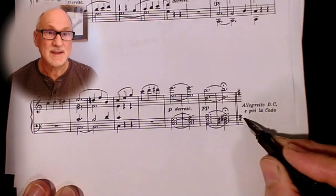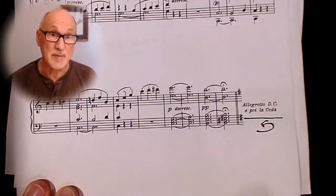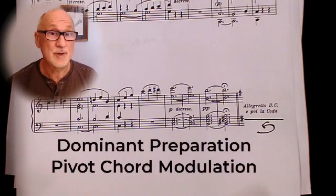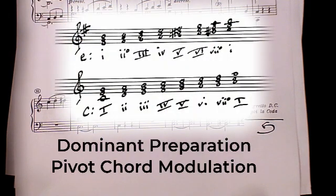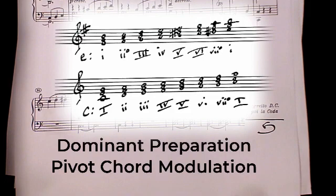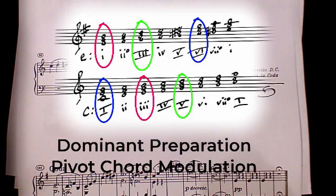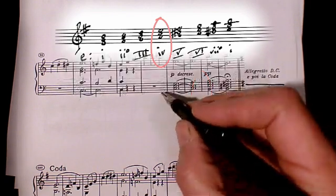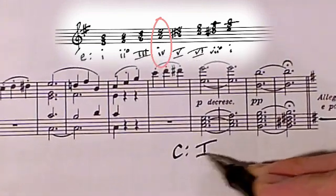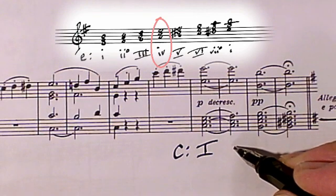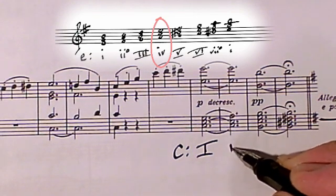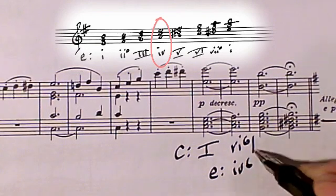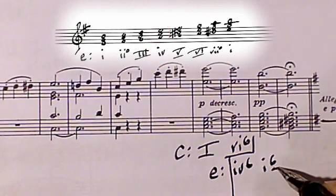At measure 100, he marks Allegretto DC e poi la coda, telling the pianist to go back and play from the beginning. Of course, this necessitates a modulation back to E minor, and this is where we get a good standard dominant preparation pivot chord modulation. Here are charts of the chords in the keys of C major and E minor. The common chords between the two keys — the potential pivot chords — are C major, E minor, G major, and A minor. Beethoven chooses the chord A minor as his pivot chord to get back to the key of E minor — a good choice, because A minor is the IV chord in E minor, a chord with strong dominant preparation function. He introduces the A minor triad in measure 98 as a VI-6 in the key of C, but as a pivot chord it is the IV-6 in the key of E minor, and it moves directly to the dominant functioning pair V6/4 to V in measures 99 to 100 to effect this modulation.